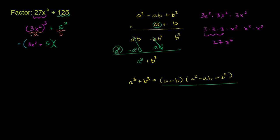Let me do this in a new color. So 3x squared squared. Let's think about that for a second. 3x squared squared, that's going to be 9x to the fourth. So it's going to be times 9x to the fourth minus the product of these two things. So minus the product of 5 and 3x squared. So minus 15x squared.